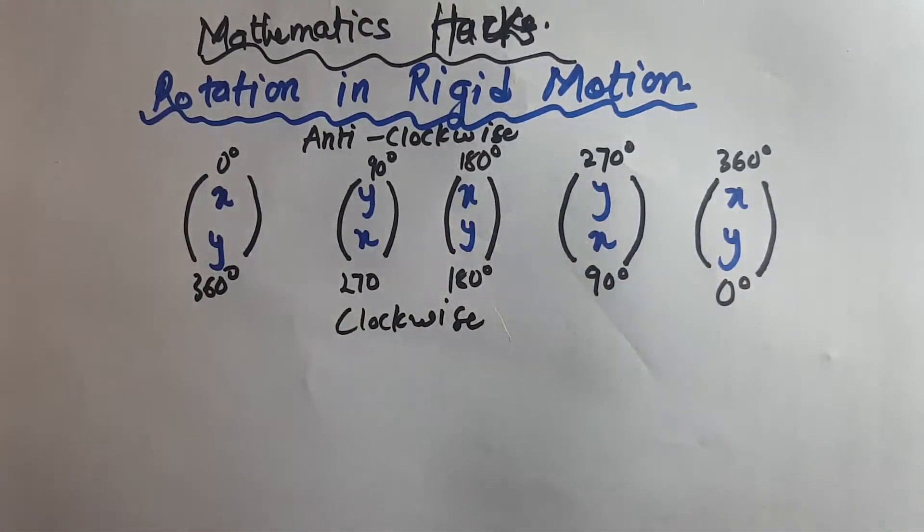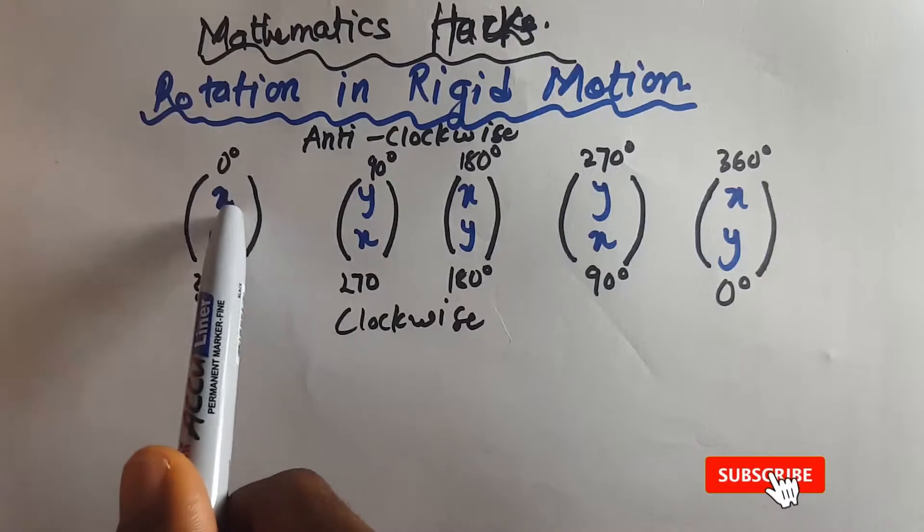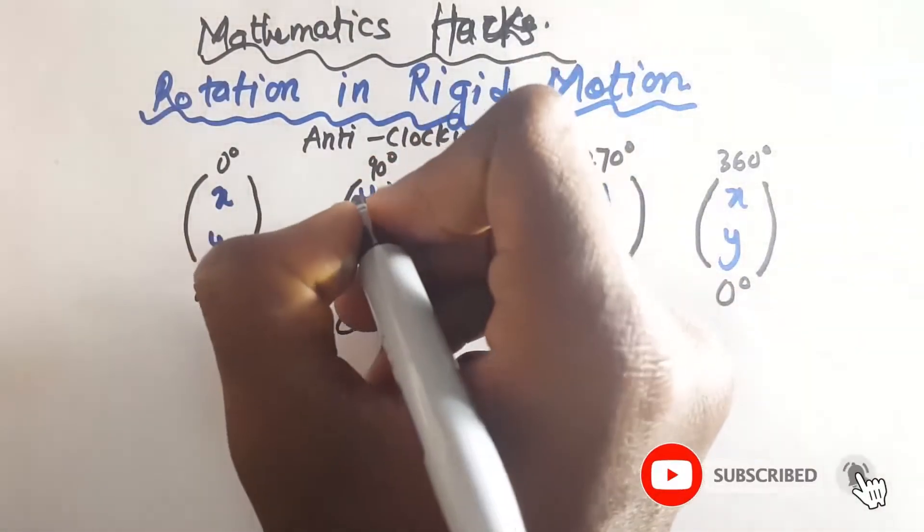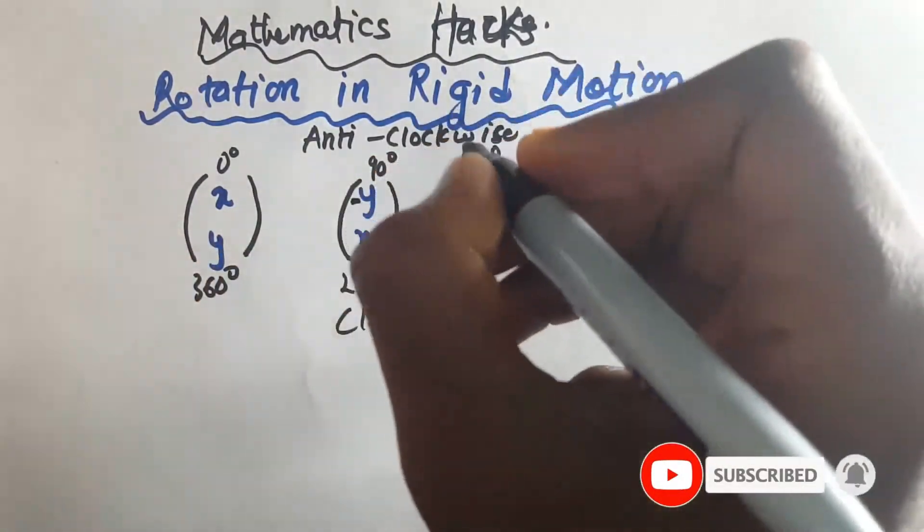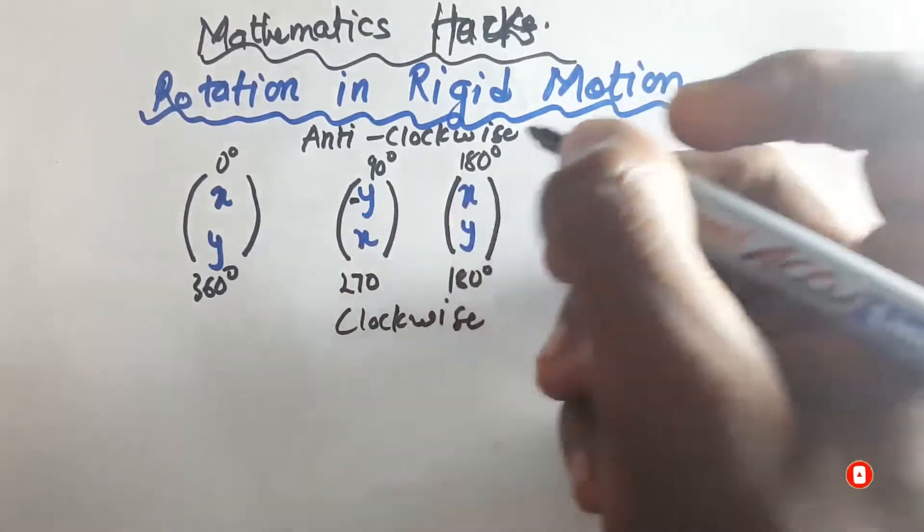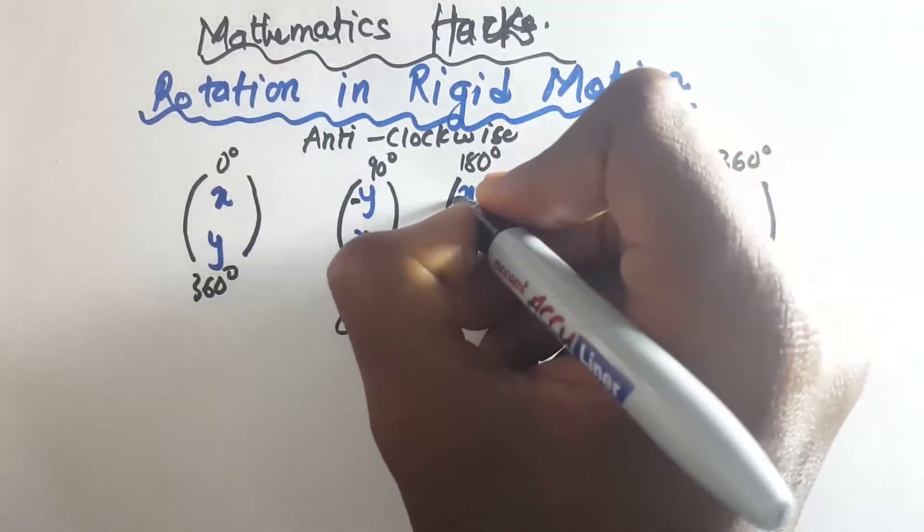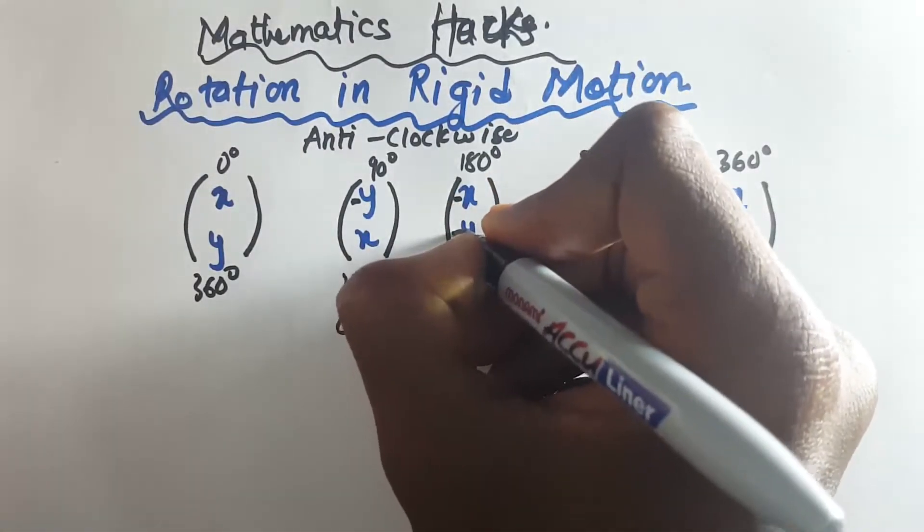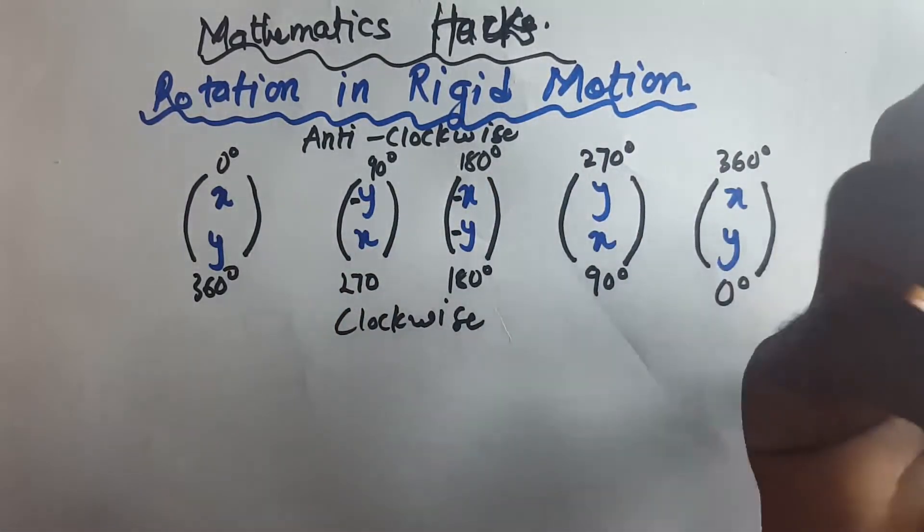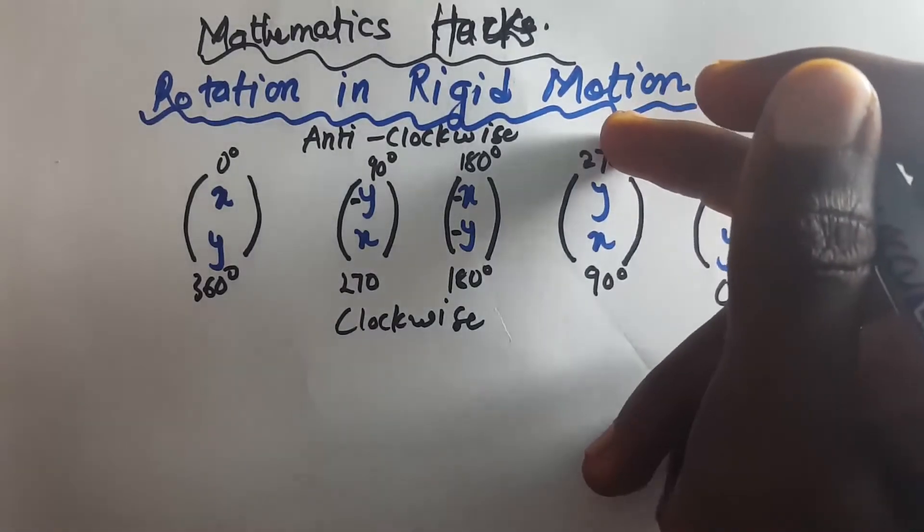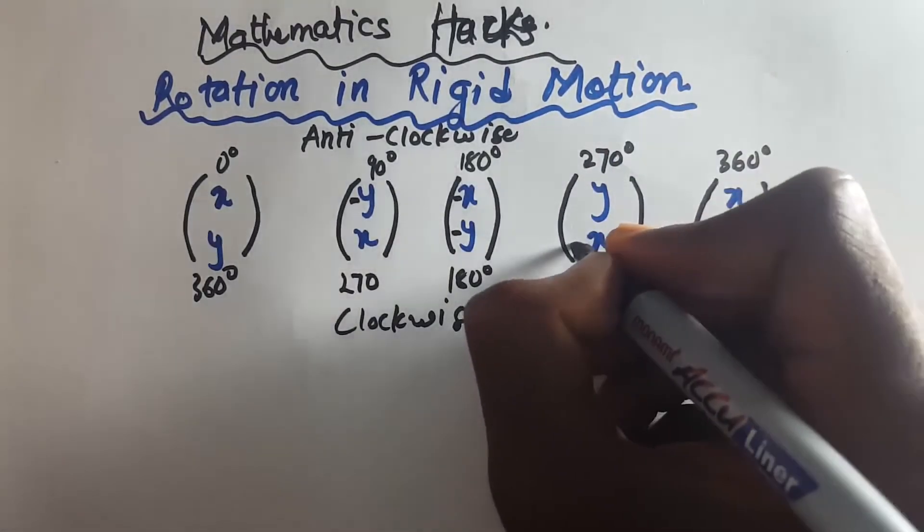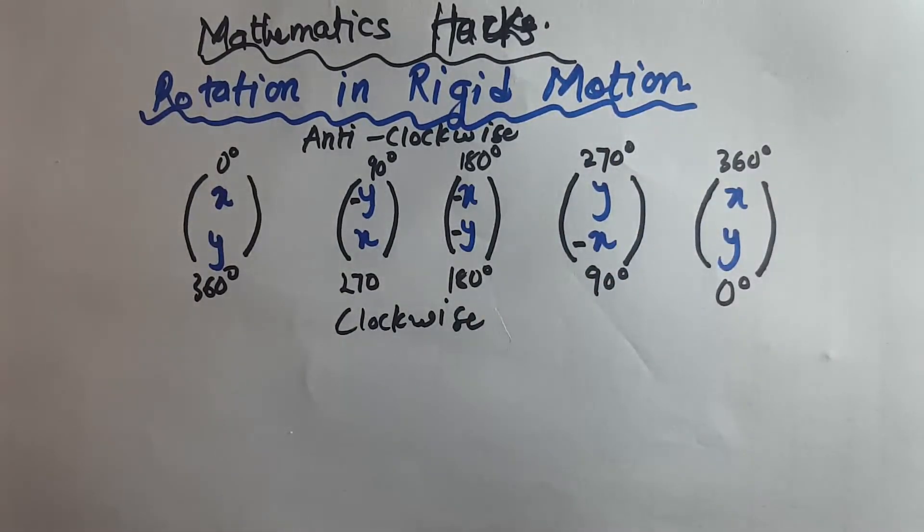The next thing you do is you indicate negative. You count one, two, and you indicate your negative on the y. Then you come to where you have 180—180 indicates negative on the x, negative on the y. Then you get to where you have your 270/90, indicate your negative on the x.